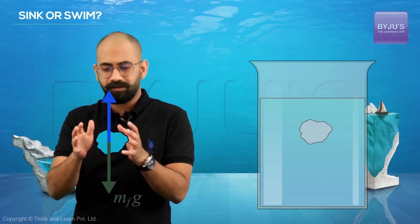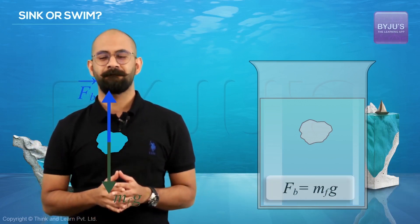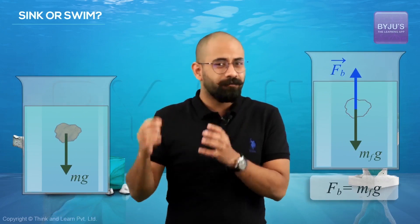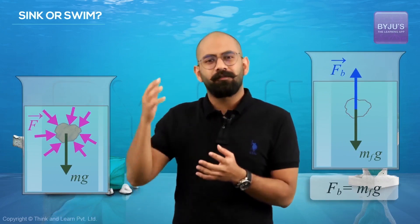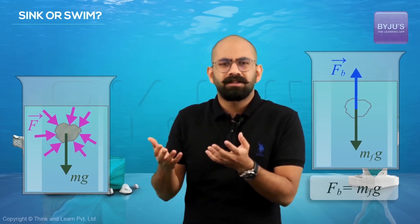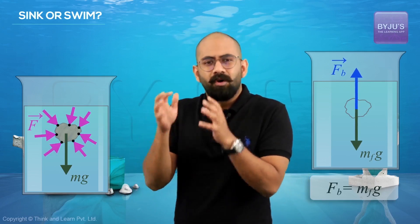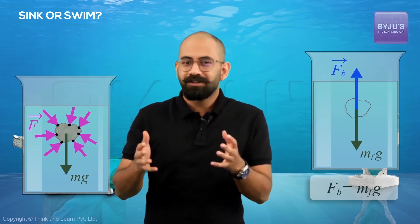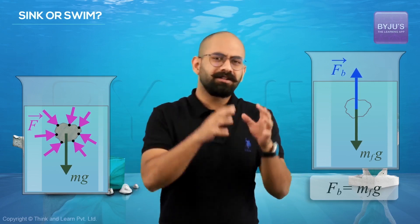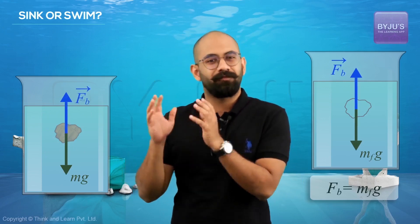If the magnitude of the resultant is Fb, then Fb equals MfG. Now come back to our first case — the surrounding fluid will apply the same force irrespective of what is in this cavity, because the pressures at those points remain the same and do not depend on what is inside. So the forces will also be the same, meaning the resultant of all the contact forces will still be Fb with a magnitude of MfG.